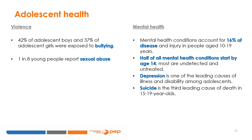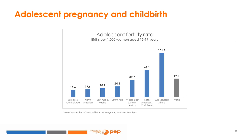Both adolescent motherhood and HIV-AIDS can lead to health problems for adolescent women and newborns, and to longer-term health and economic consequences. Worldwide, 42 out of 1,000 women aged 15 to 19 give birth. However, the world average hides large differences across regions. In Europe and North America, the adolescent fertility rate is approximately 17 births per 1,000 women, while in Latin America and Africa, the rate is 62 and 101 births per 1,000 adolescent women, respectively.